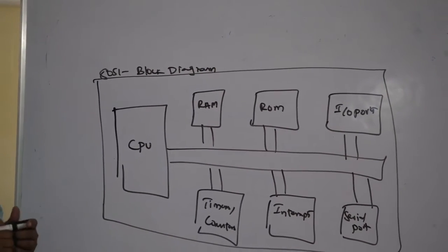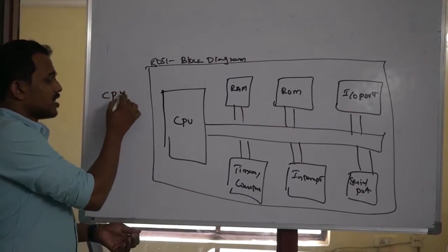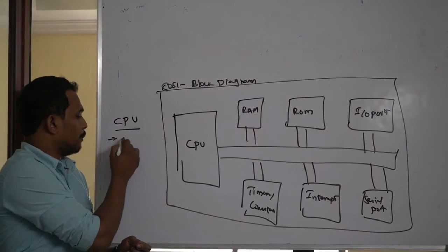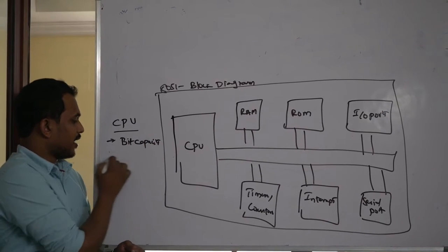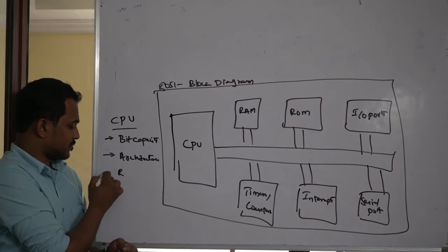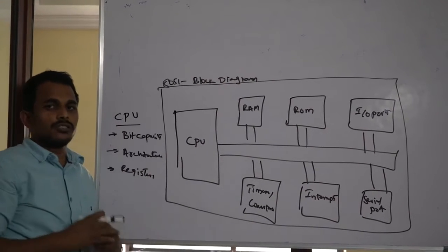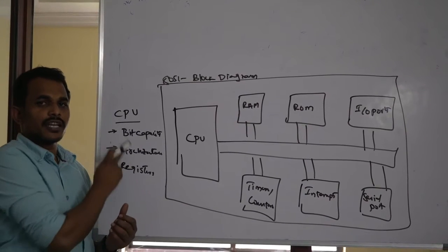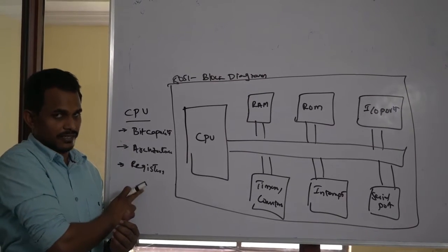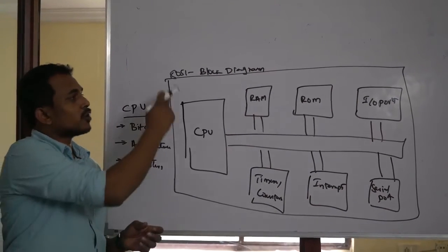From this diagram, there are important things you need to know clearly. The first block is the CPU — Central Processing Unit. About the CPU, you have to learn three important points: one is bit capacity of the processor, second is architecture, and third is registers. These are the three important points about any CPU or processor. The bit capacity of your processor decides the microcontroller's bit capacity.